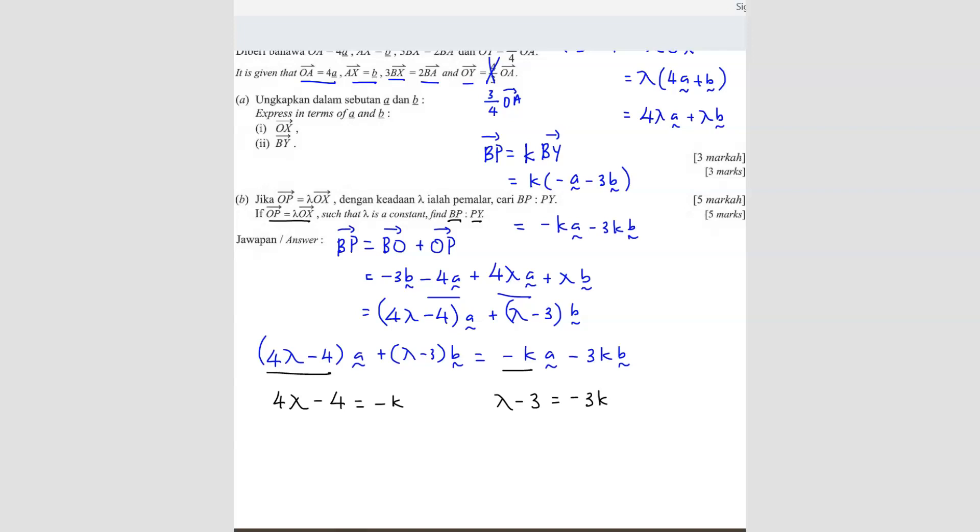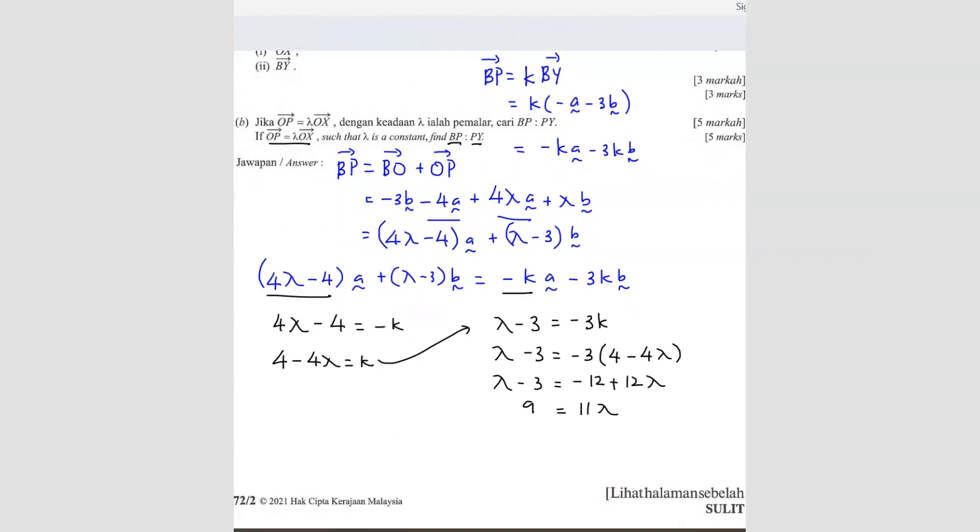What can we do? We can do simultaneous. But we shift the negative first. So we get 4 minus 4 lambda equals to K. So we can take this equation, substitute into the second equation. We've got lambda minus 3 equals to negative 3, 4 minus 4 lambda. So you get negative 12, positive 12 lambda. So your answer should be, this lambda I can bring over there. So I get become minus. So I will have 11 lambda and then this one I bring over here will become positive. So I get 12 minus 3 is 9. So I know that lambda is equals to 9 over 11.